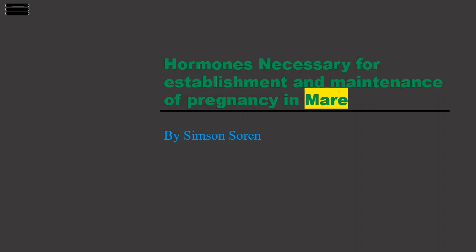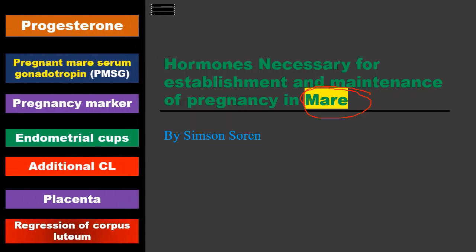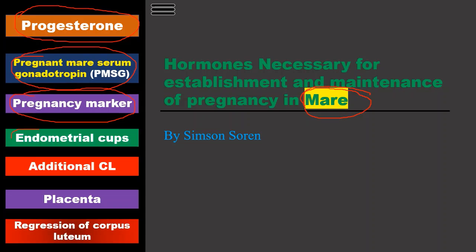Let us see what are the hormones and necessary structures for the establishment and maintenance of pregnancy in mares. We will discuss the hormone progesterone, PMSG (Pregnant Mare Serum Gonadotropin) which is also used as a pregnancy marker, the endometrial cup structure which produces PMSG, the role of additional corpus luteum, the role of the placenta, and regression of the corpus luteum.